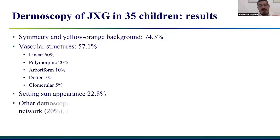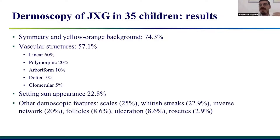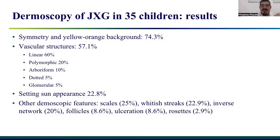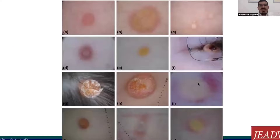We also found other dermoscopic features such as scales in 25%, wide streaks, inverse networks, follicles, ulceration, and rosettes in a minority of patients.